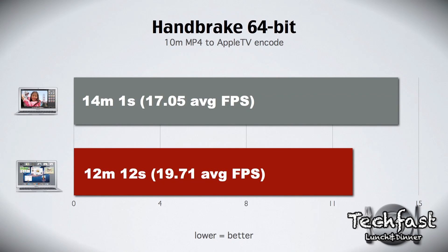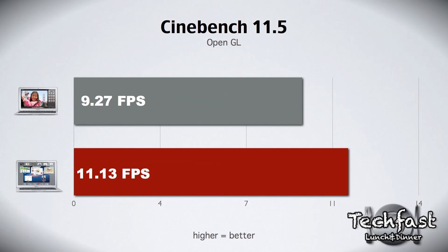On the 64-bit version of Handbrake, encoding a 10 minute MP4 file to an Apple TV 2 preset, the 11 inch MacBook Air took 14 minutes and 1 second at an average of 17.05 frames per second. The 13 inch MacBook Air completed the same encode in 12 minutes and 12 seconds at an average of 19.71 frames per second.